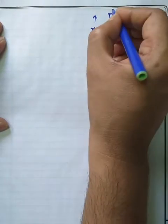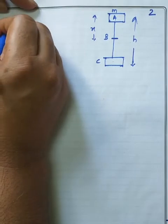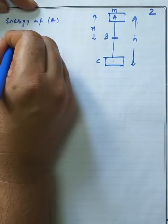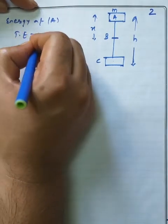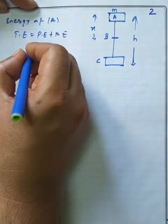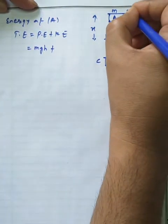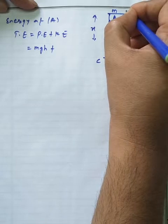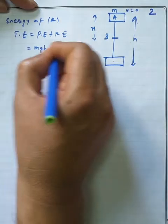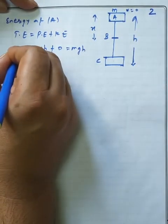The mass of the object is M. Energy at point A equals the sum of potential energy plus kinetic energy. Potential energy equals MgH. Since the velocity V is zero, kinetic energy is zero. So the total energy will be entirely in the form of potential energy. This is the first specification.